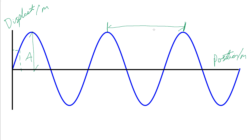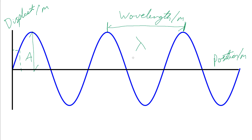On this graph we can still read off displacements and amplitude, but we'd be reading displacement at a particular position rather than at a particular time. The distance from one peak to the next — or from any point in a wave to the same point in the next cycle — also has significance. Rather than asking the time for one complete cycle, we ask what distance a complete cycle covers. This is called the wavelength, given the special symbol lambda (λ), and measured in units of length. Visible light has wavelengths in nanometres (10⁻⁹ m), while radio waves can have wavelengths up to several kilometres.